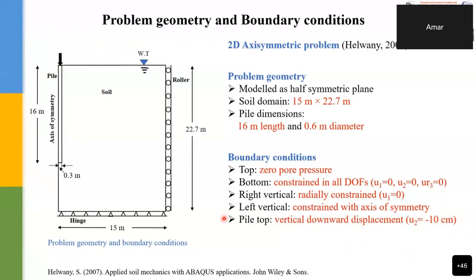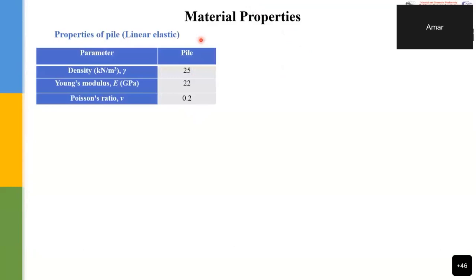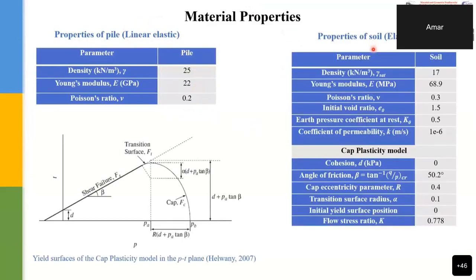For material properties, the pile is modeled as a linear elastic material with the given properties. The soil is modeled as an elastic-plastic material. The plasticity model parameters pertain to the Modified Cap plasticity model and govern the evolution of the yield surfaces, as shown in the corresponding figure.